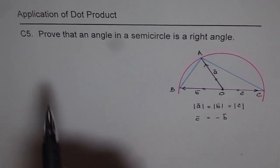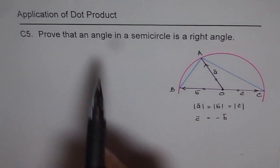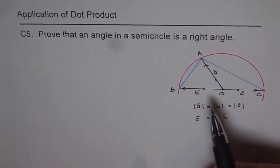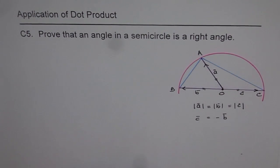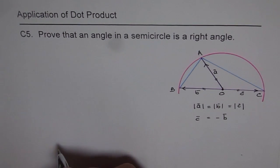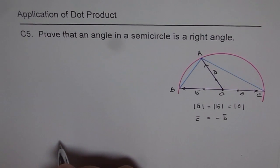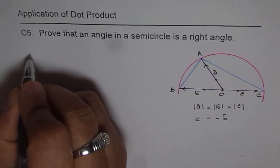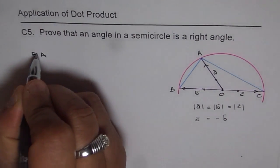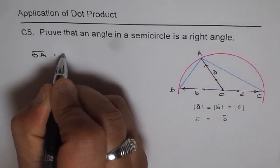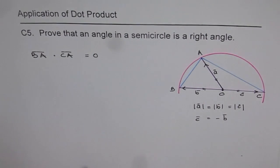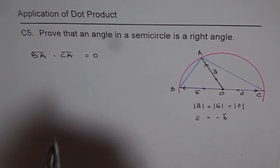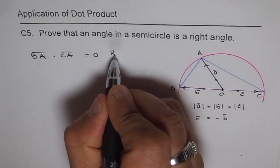Now we need to prove that an angle in a semicircle is right angle. So the angle found here in the semicircle is angle A. Now if I prove that BA dot CA is 0, that means angle A is right angle. So what I basically need to prove here is that BA dot CA equals to 0. This is what I'm required to prove.